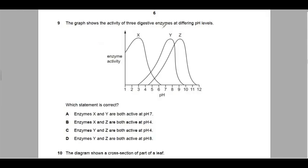Our answer here is Y. Let's look at this one. The graph shows the activity of three digestive enzymes at different pH levels. So we've got enzyme activity here and this time we're talking about pH. 1, 2, 3, 4 up to 12. Enzyme X, Y and enzyme Z with different graphs.